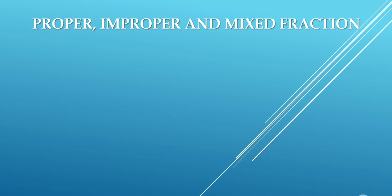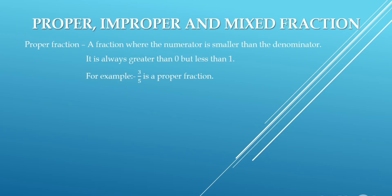Proper fraction: a fraction where the numerator is smaller than the denominator. It is always greater than 0 but less than 1. For example, 3 upon 5 is a proper fraction. Here, the numerator is smaller than the denominator.